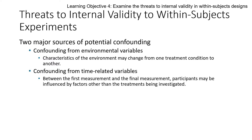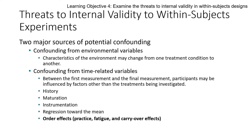Even more relevant are time-related variables. Between the first measurement and the final measurement, participants may be influenced by many factors other than the treatment. It could be a history factor — something in history caused an effect. It could be a maturation factor, especially if you're measuring weeks or months apart. It could be an instrumentation issue because instruments change over time. It could be regression towards the mean.